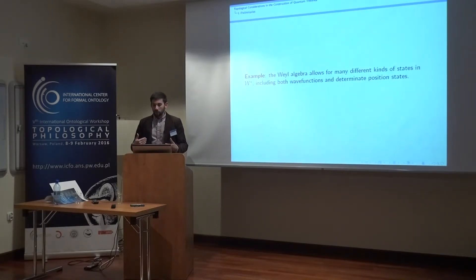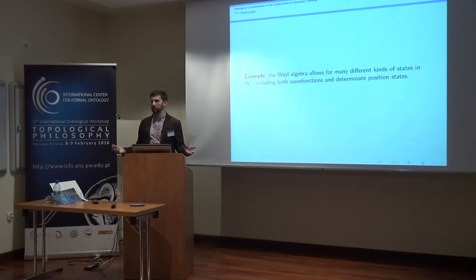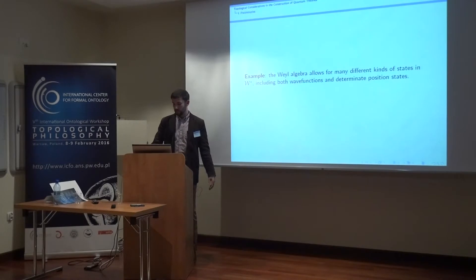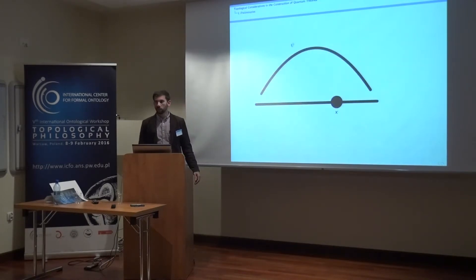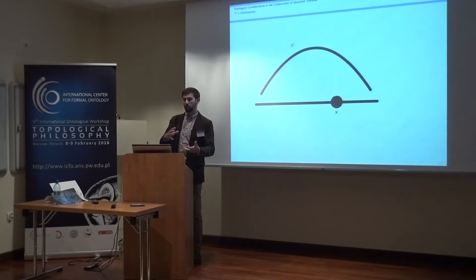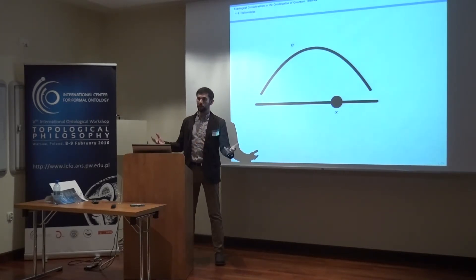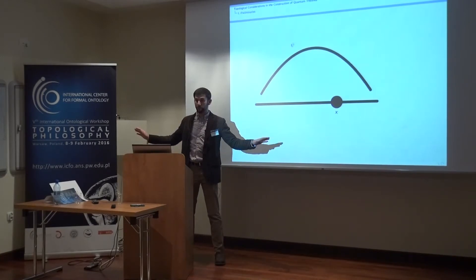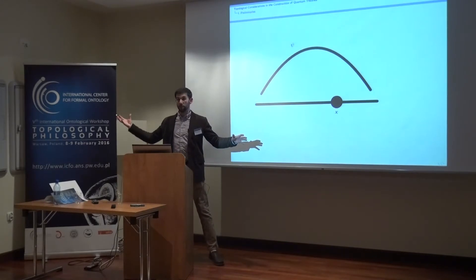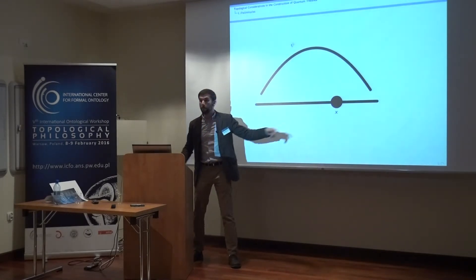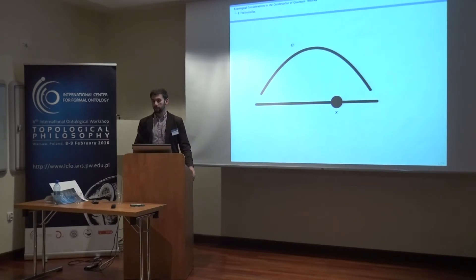On the other hand, if we look at the Weyl algebra in quantum physics, we see that there are actually many different kinds of states that one gets. For example, we get both wave functions and determinate position states. When you look for Hilbert space representations of this algebra — those typically used for quantum theory — you find one Hilbert space representation that contains all of the wave functions as possible states, which are spread out over space. But there's also another Hilbert space containing a different collection of states that are also allowed: the determinate position states. So both are allowed on the Weyl algebra.